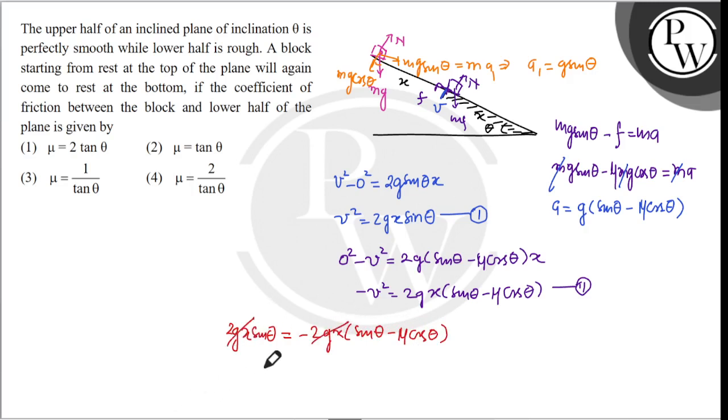Solving the equations: sin θ = sin θ - μ cos θ becomes 2 sin θ = μ cos θ, so μ = 2 tan θ. The value of μ is 2 tan θ, which is option 1. I hope you understood the solution. Thank you.